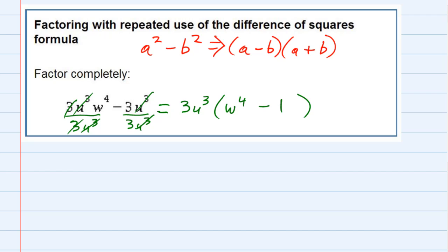So, this middle term here, this last term, is in the format of a difference of two squares. And just to help us see it a little bit better, I'm going to write it as w² squared, minus 1 squared. So that we can see that it is a difference, it's subtraction, and each one is being squared.